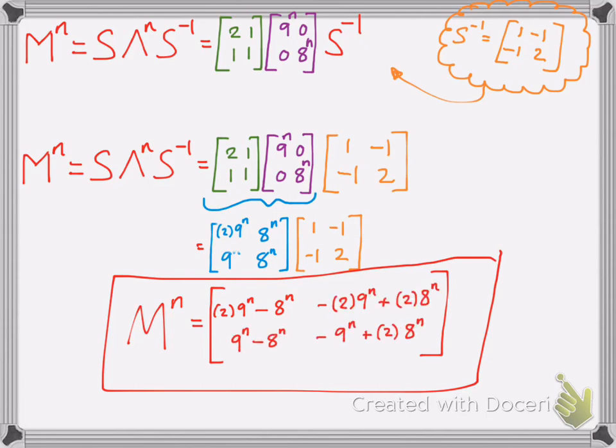And now it's really cool. So if I want to raise M to the 3rd power, I just plug in wherever I see n - I plug in the number 3. And then you can get what the matrix will be raised to the 3rd power, instead of multiplying M times M times M.